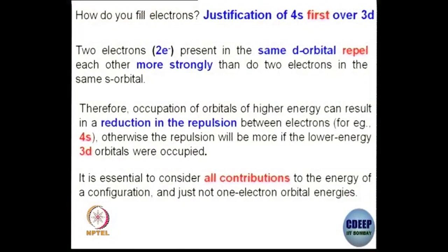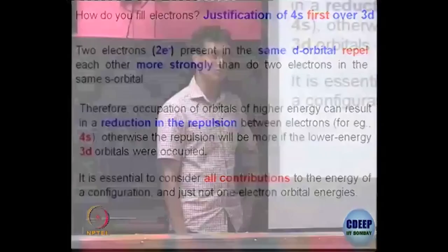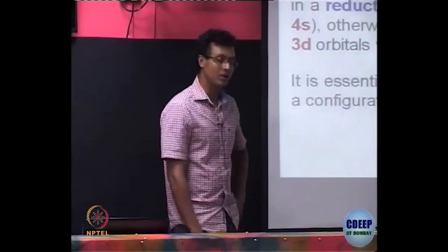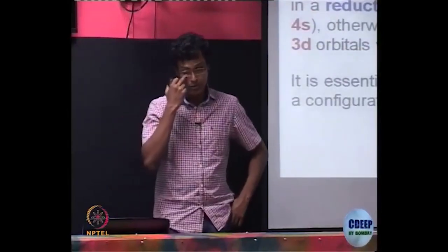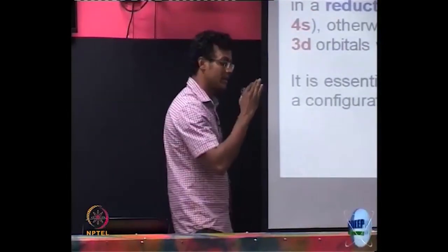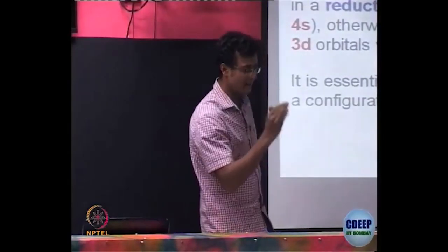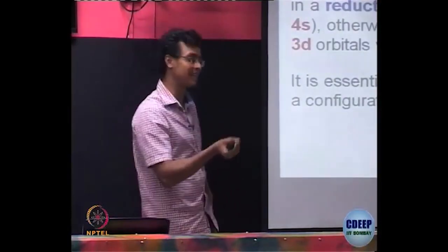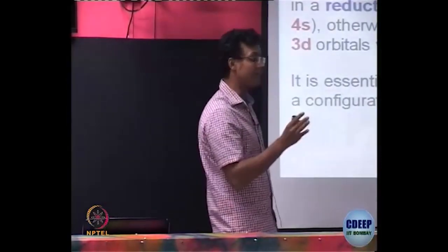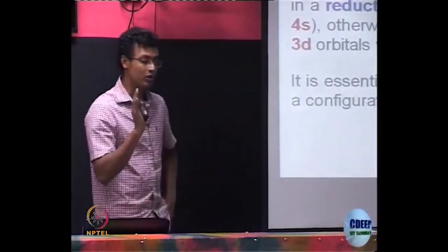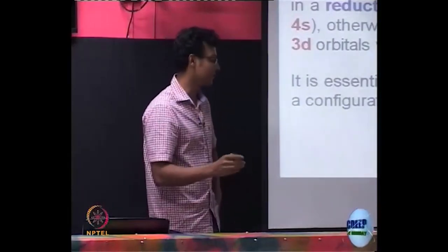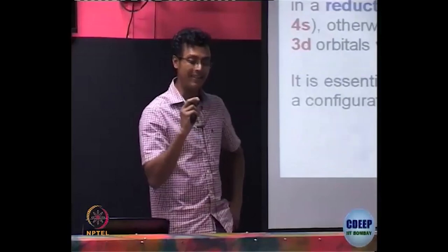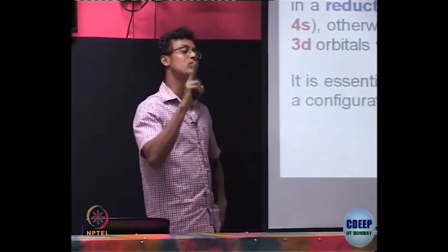Once again, this is kind of a disclaimer: you have to consider all other contributions. We should not be seeing numerically that 1s, 2s, 2p, 3s, 3p, 3d; instead, we should be looking at their relative energy and the consequences of filling these orbitals — 4s versus 3d. In this case, the repulsion among the electrons determines which one is going to be preferentially filled.